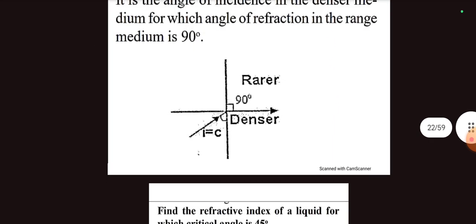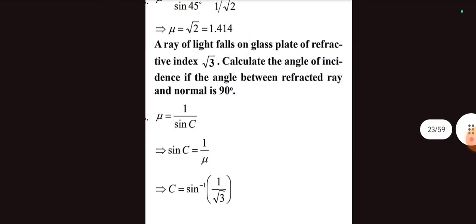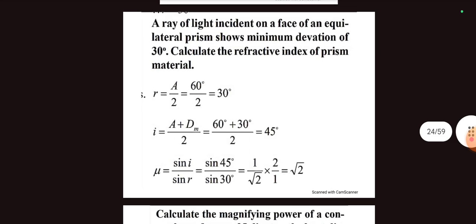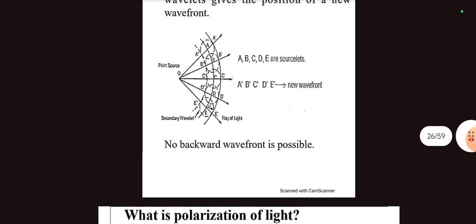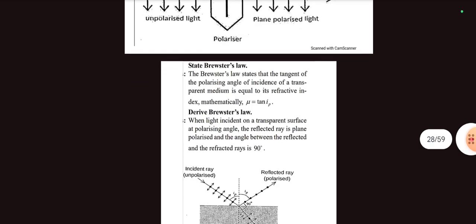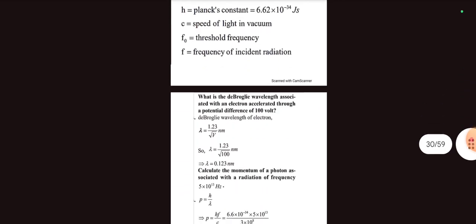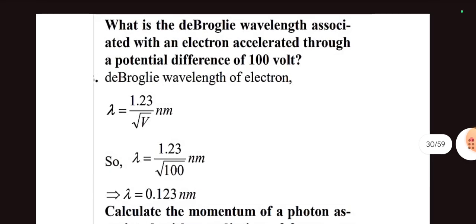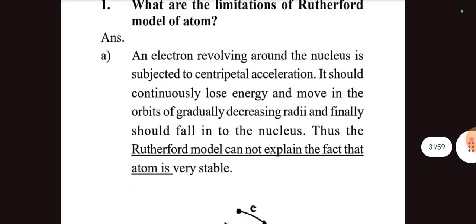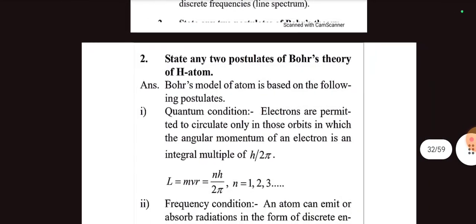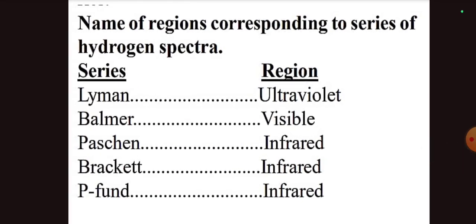Define critical angle, critical angle related problem as per refractive index mu equal to 1 by sine of critical angle. Optics a problem, then refractive index problem, magnifying power of lens, principal of polarization, polarization of light as optics important question. Photoelectric effect, photoelectric equation. What is the de Broglie wavelength, the problem, limitation of Rutherford atomic model, postulate of Bohr atomic model.